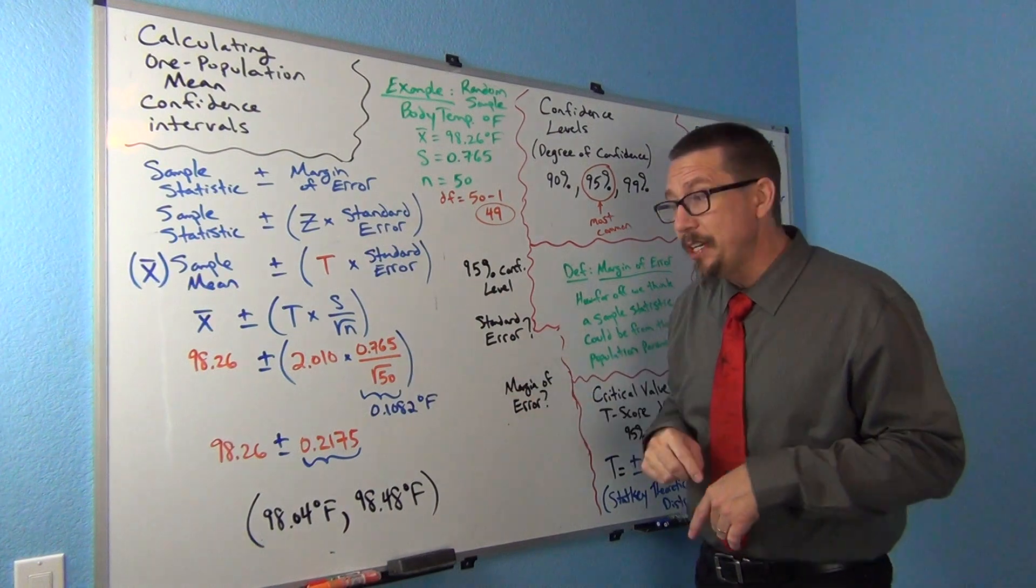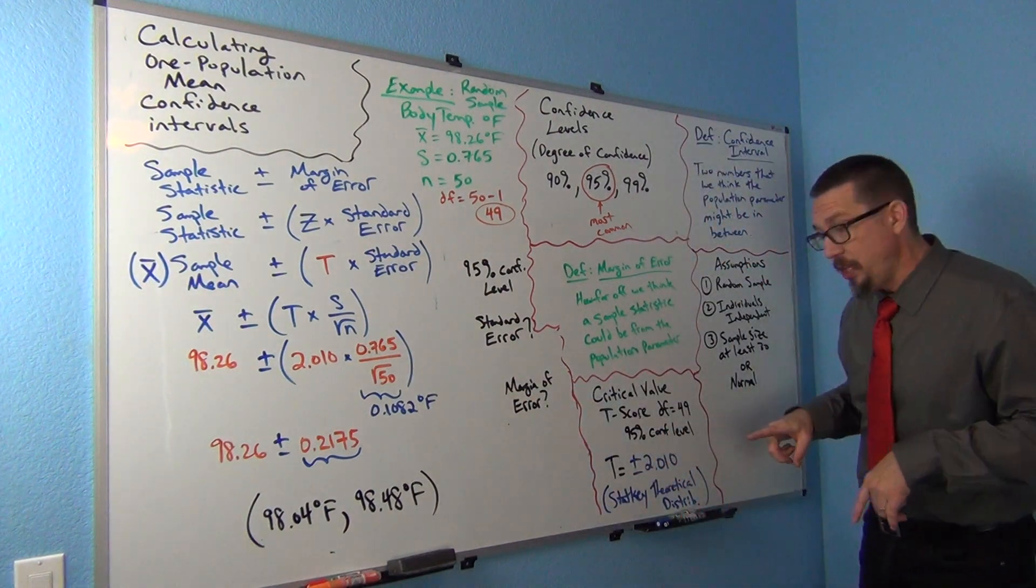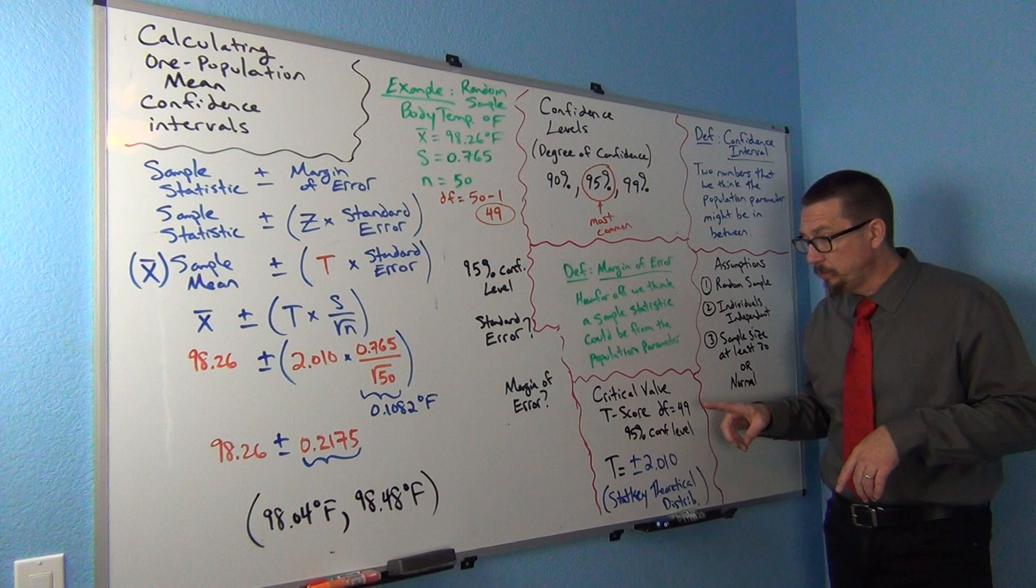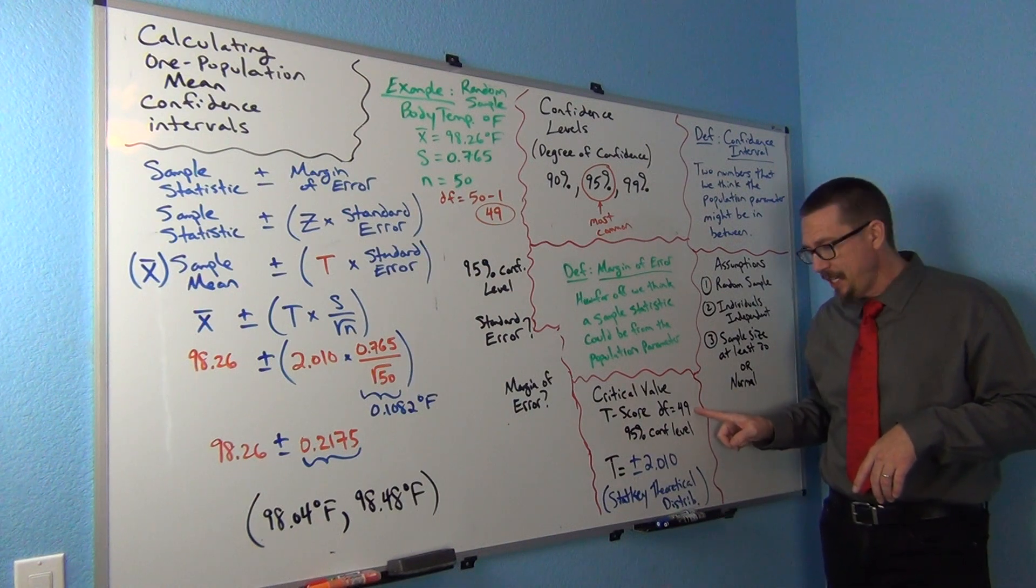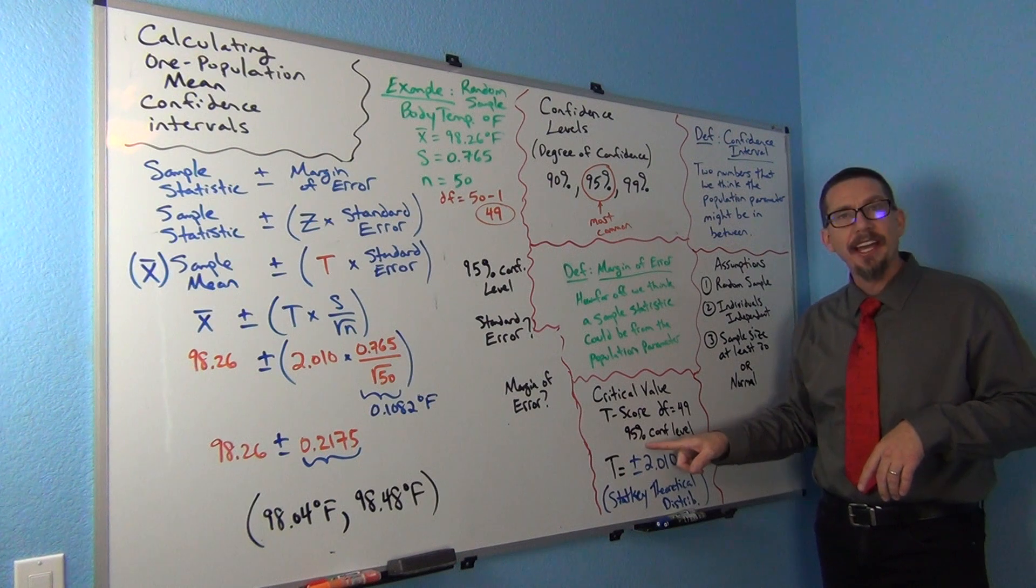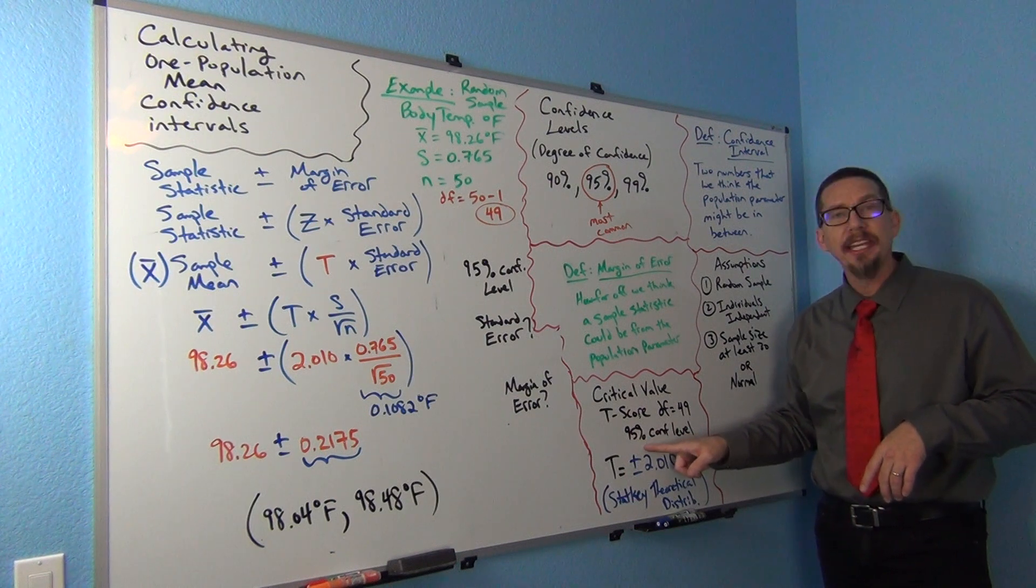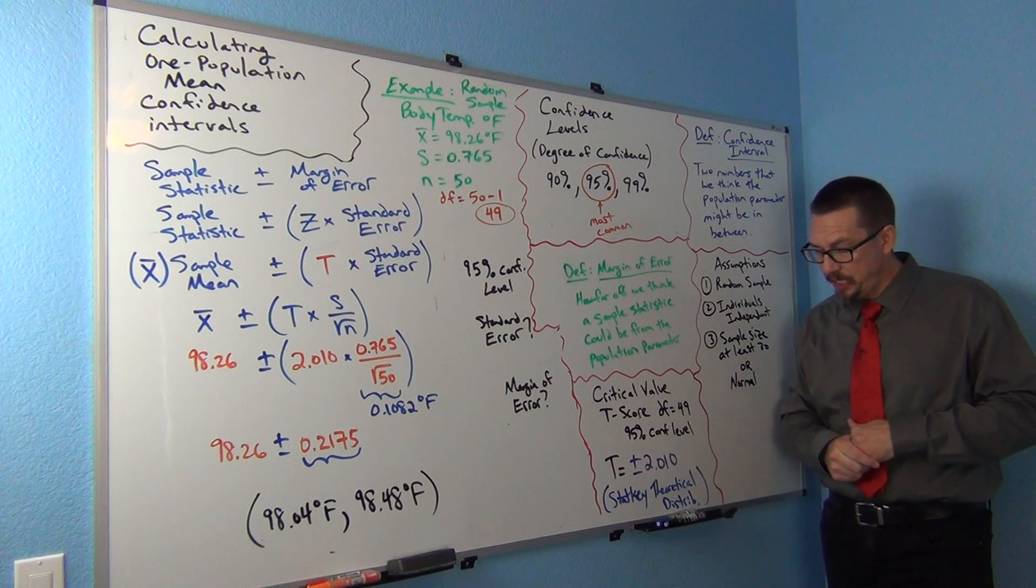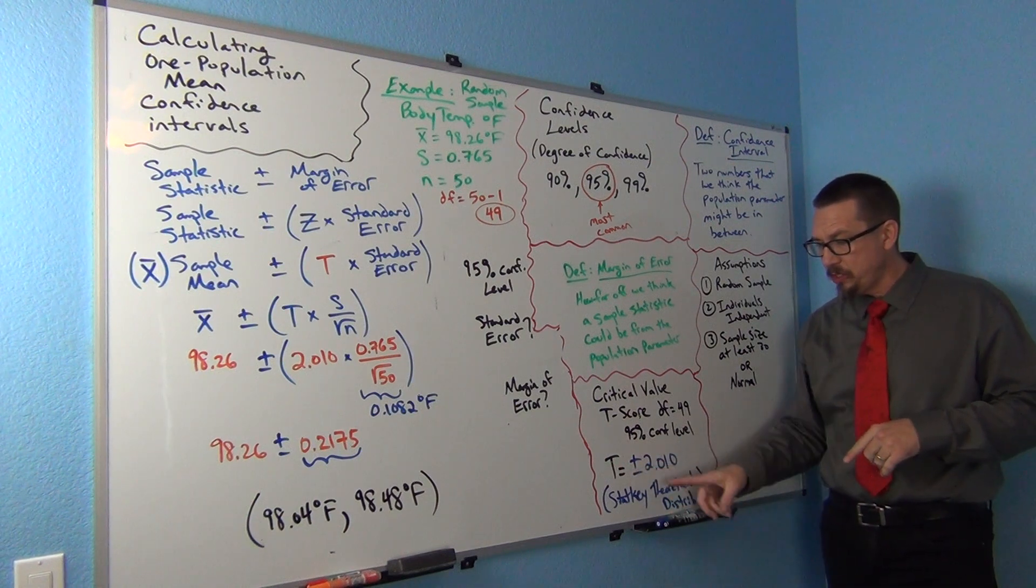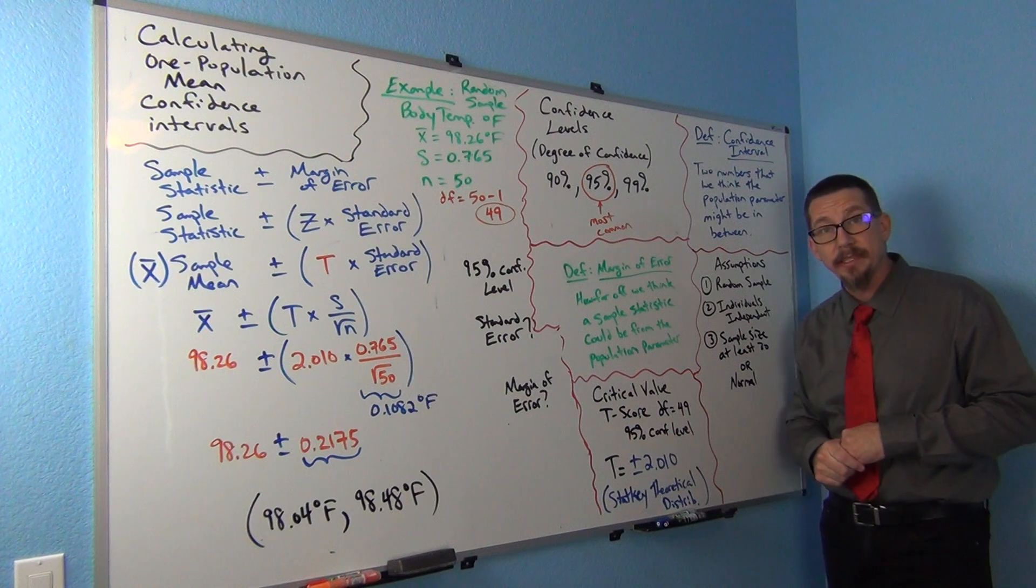I went ahead and went into StatKey just like I showed you in the critical value video. I put in degrees of freedom 49, clicked on two tail, and then put in 95% in the middle. This is what we got. The critical value t-scores were plus or minus 2.010.